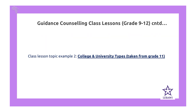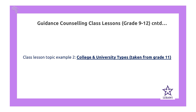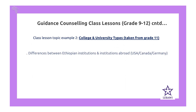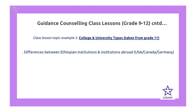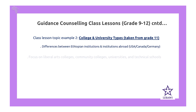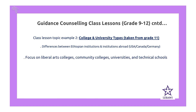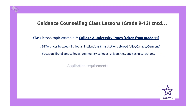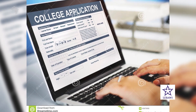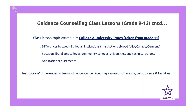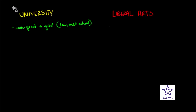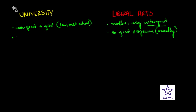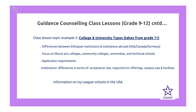The second example is college and university types, taken from grade 11. We look at the differences between Ethiopian institutions and institutions abroad, such as countries in the USA, Canada, and Germany. We focus on the USA and cover liberal arts colleges, community colleges, universities, and technical schools. We talk about application requirements, institution differences in terms of acceptance rates, major and minor offerings, campus size, and facilities. We also discuss Ivy League schools, which are located in the USA.